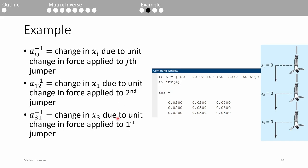When we compute A inverse in MATLAB using the given k values, we end up with these values. Observe that the numbers in the first column indicate that the position of all three jumpers would increase by 0.02 meters if we added an extra newton of force to the top jumper. This makes sense because the additional force would stretch the first cord by that amount, and then the other two jumpers below him would just be dragged along down with the first jumper.